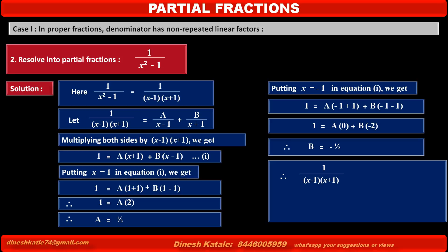Therefore, the given fraction 1 upon x minus 1 into x plus 1 equals 1 upon 2 upon x minus 1 plus minus 1 upon 2 upon x plus 1. Taking 1 by 2 common, we get 1 upon 2 into 1 upon x minus 1 minus 1 upon x plus 1. Try to solve this problem again in your notebook without copying.